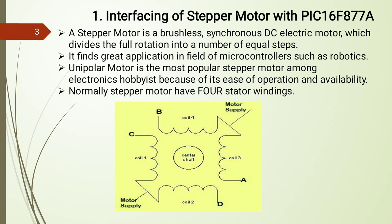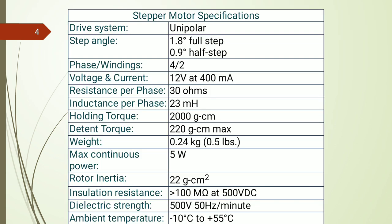A stepper motor is a type of DC motor — specifically a synchronous and brushless DC motor. It has four windings labeled A, B, C, and D, with one central shaft. Stepper motors are of two types: unipolar and bipolar. Unipolar stepper motors are mostly used for various applications, with four stator windings as shown in the diagram.